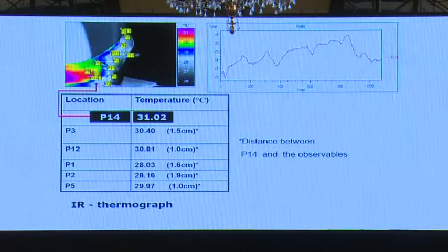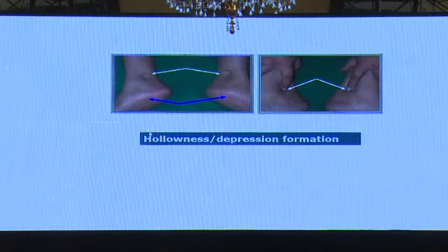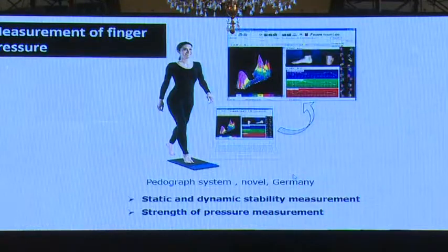How to measure these features? For tenderness, the visual analog scale is used, and local temperature is measured through IR thermography — infrared thermography. Comparing the adjacent area within a limit of two centimeters, there is a rise of temperature of almost three degrees. Hollowness and swelling can also be measured using the interference tomography method, which allows quantitative estimation of the swelling.